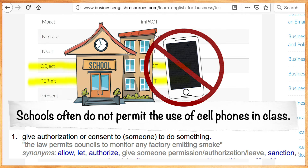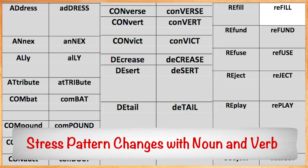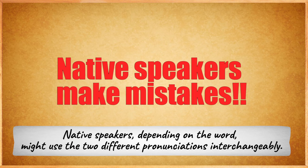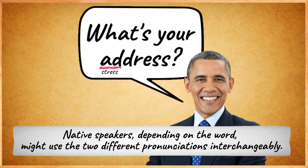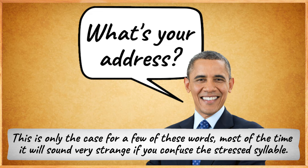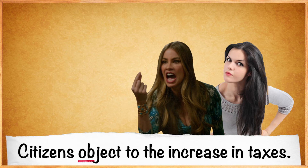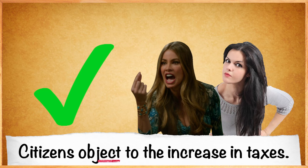So why might this be confusing? First, you have to understand that sometimes there is a difference in pronunciation between nouns and verbs, which can be quite frustrating. Another confusing thing is that native speakers, depending on the word, might use the two pronunciations interchangeably — I have heard many native speakers say both 'what's your address' and 'what's your address.' However, this is only the case for a few words. Most of the time it sounds very strange if you confuse the stressed syllable — for example, 'I need a permit' or 'the citizens object' sound very weird. Just understand that sometimes a native speaker might use the incorrect pronunciation and get away with it, but most of the time it would sound very strange.